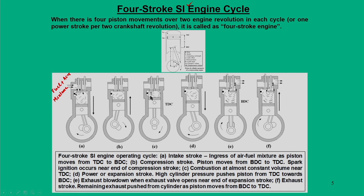When the piston is at TDC, the entire charge is fully compressed. Here we have a spark plug that gives adequate voltage to the charge so that it can be ignited; during this time both valves are also closed. Once the charge gets ignited, pressure and temperature shoot up, and the piston receives force causing it to travel from TDC to BDC — this is the expansion or power stroke. High cylinder pressure pushes the piston from TDC towards BDC until the piston reaches BDC.